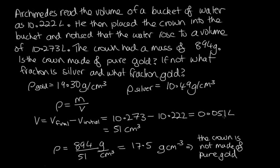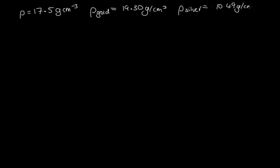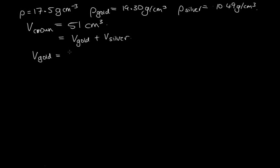Now we need to work out what fraction of the crown is silver and what fraction is gold. We have: density of the crown = 17.5 g/cm³, density of gold = 19.30 g/cm³, density of silver = 10.49 g/cm³, and volume of crown = 51 cm³. The crown is made up of the volume of gold plus the volume of silver, so: volume of gold = 51 cm³ minus the volume of silver. Call that equation one.